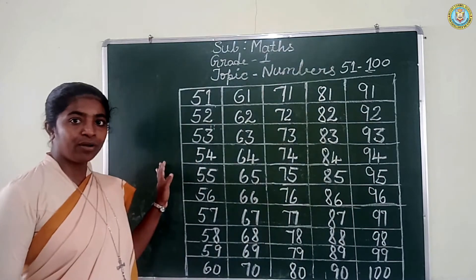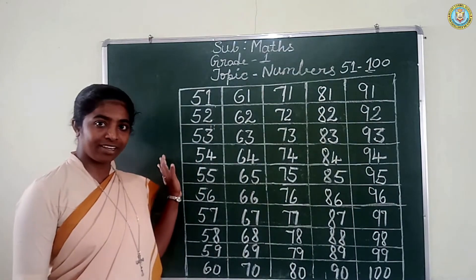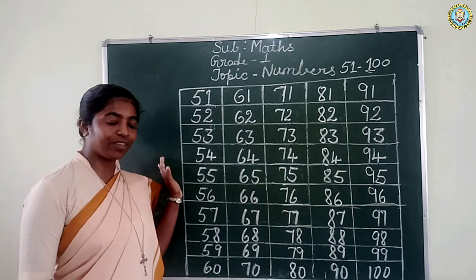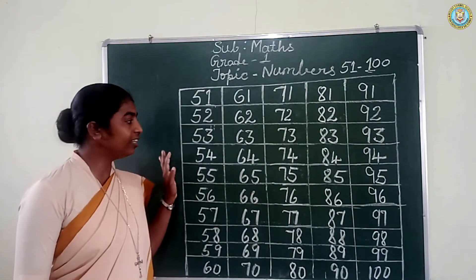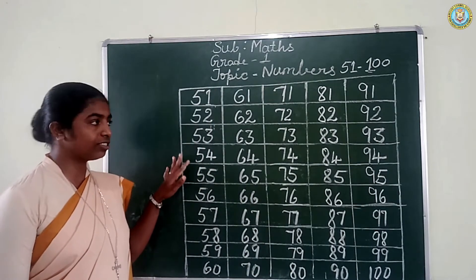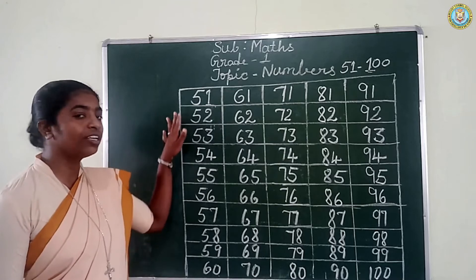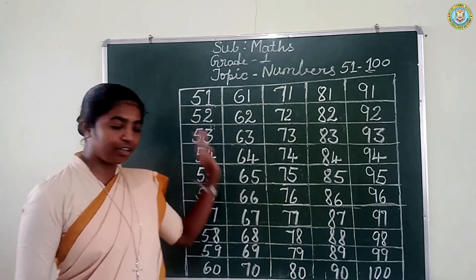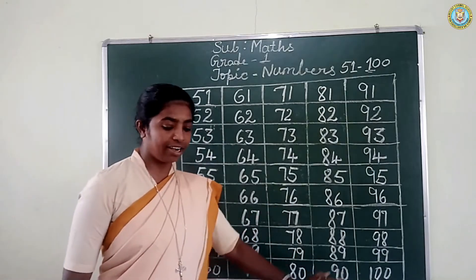Look at the board. What have I written on the board? I have written numbers — numbers 51 to 100.